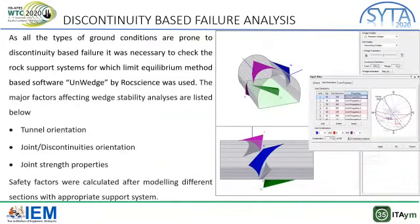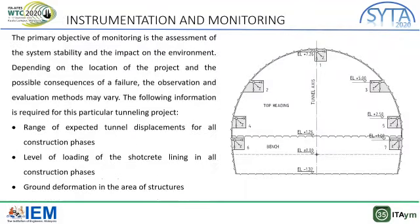Discontinuity-based failure analysis was also performed using UNWEDGE, with major inputs being tunnel orientation, joint orientation, and joint strength properties. Safety factors were calculated with a basic safety factor of 1.5. Moving on to instrumentation and monitoring — which is required to record the range of expected tunnel displacements, the level of loading, and the ground deformations — this figure gives an idea of a typical monitoring arrangement installed at the tunnel.